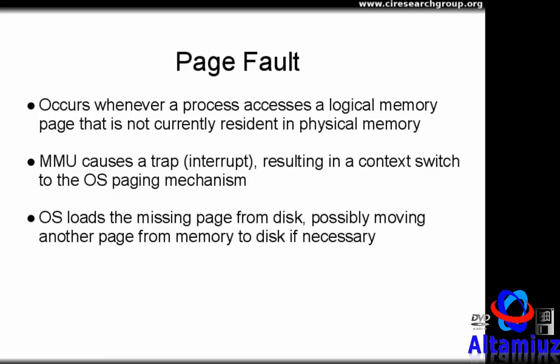Page swaps are implemented by the operating system, but some assistance from hardware is required to determine when a page swap needs to be performed. When translating a page number to a frame number, the MMU checks to see if the corresponding frame is resident, or loaded, in RAM. If the frame is present, the memory access proceeds as normal. If the frame is not present in RAM, the MMU generates a page fault, which is a CPU exception similar in concept to an interrupt. A specific page fault handling routine is registered with the system, either as part of the interrupt vector table or using a separate structure for fault handlers.